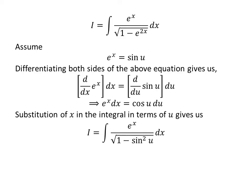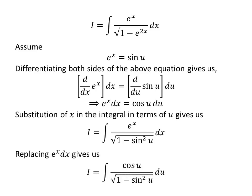Substituting exponential of x in the denominator of the integrand gives us i equal to the integral of exponential of x upon square root of 1 minus square of sine of u. Replacing exponential of x times dx by cosine of u times du, we get i equal to the integral of cosine of u upon square root of 1 minus square of sine of u with respect to u.